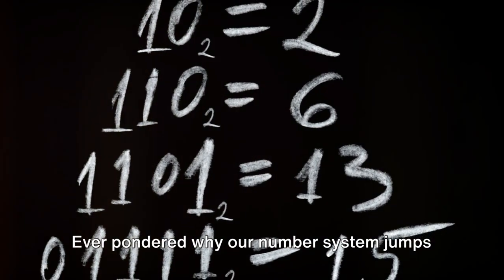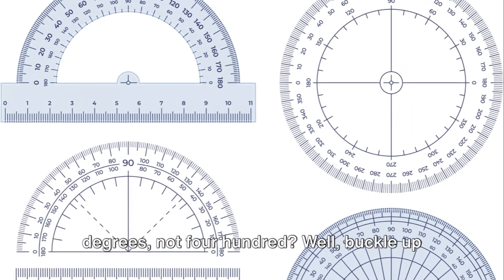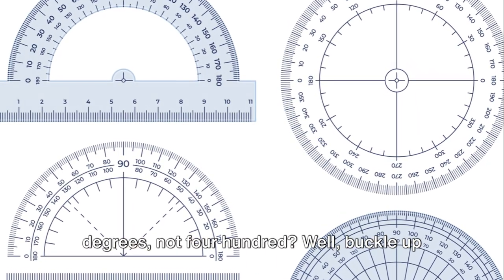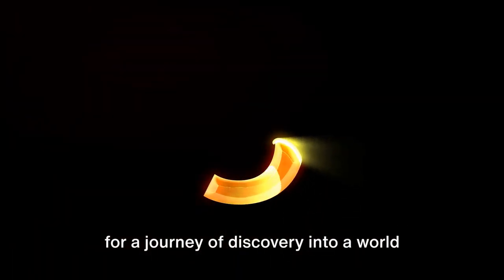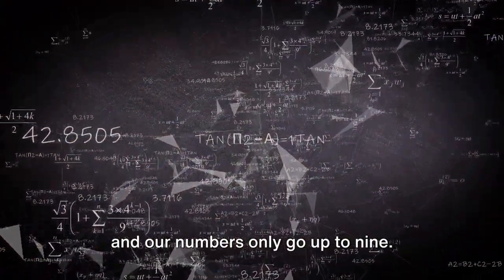Ever pondered why our number system jumps from 9 to 10? Or why a circle is divided into 360 degrees, not 400? Well, buckle up for a journey of discovery into a world where circles have 400 degrees and our numbers only go up to 9.